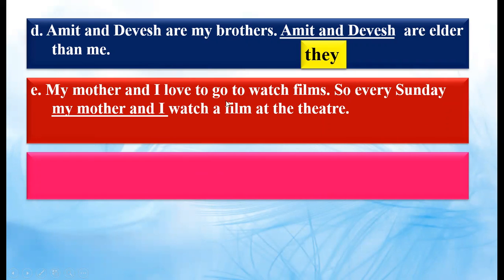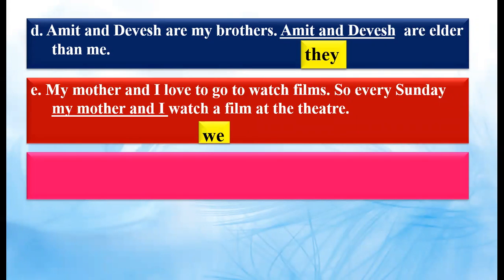My mother and I love to go to watch films. So every Sunday, my mother and I watch a film at the theater. Here 'my mother and I' is underlined, so here we can write W-E, 'we'. Why? Because the person is saying 'my mother and I', so the person self is included. That is why we will write 'we' as a pronoun.